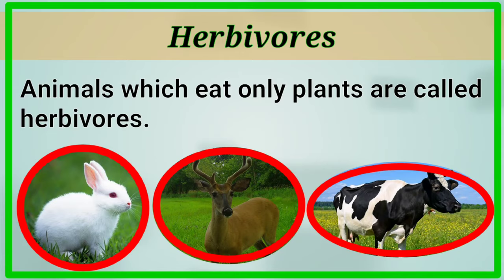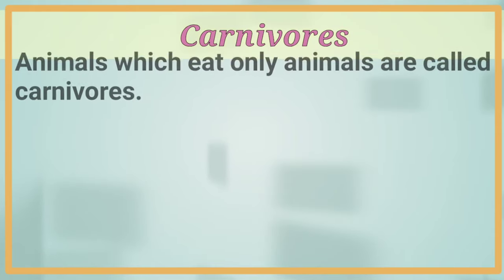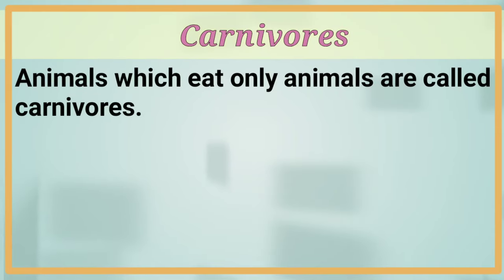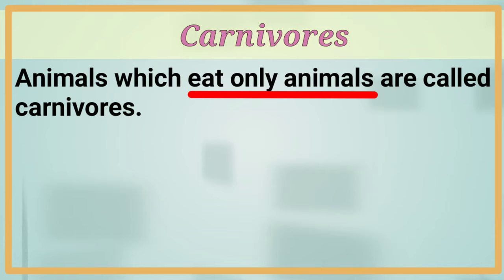The second category is carnivorous. Can you define carnivorous? Like herbivorous, yes — we can define it as animals which eat only other animals are called carnivorous. That is, these animals only eat flesh or other animals.